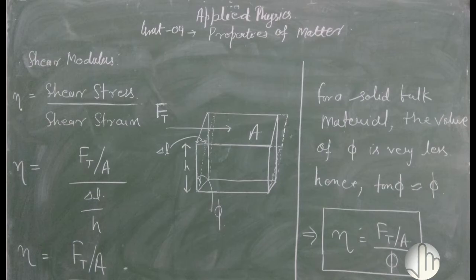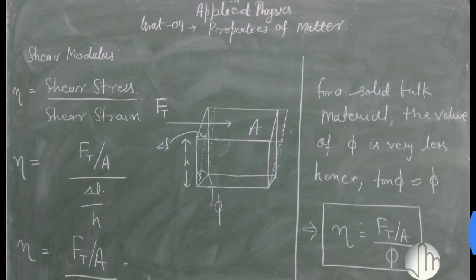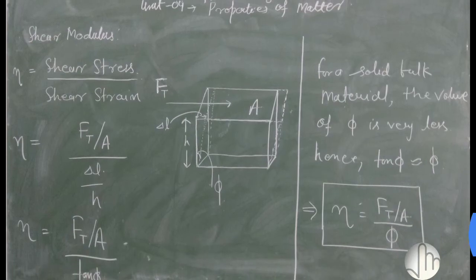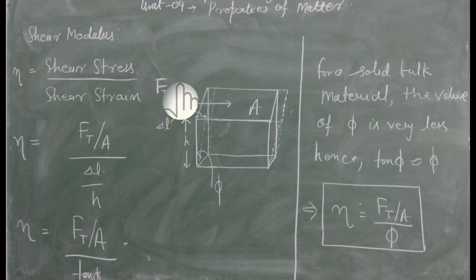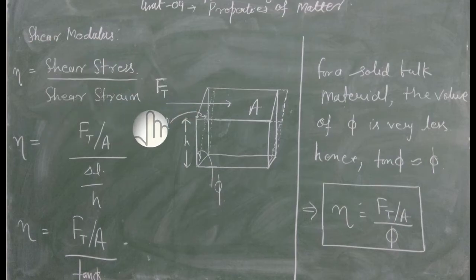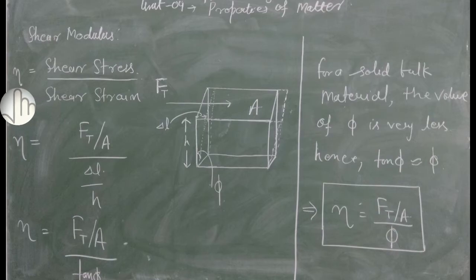Bulk modulus پڑھ لیا ہے اور اب ہے ہمارا last — shear modulus، جو اپنے syllabus کے مطابق ہے۔ Shear modulus کیا ہوتا ہے: elastic modulus کی definition کے مطابق، stress upon strain۔ Shear کی جب بھی بات کریں گے تو shear stress upon shear strain جو ہوگا وہ shear modulus ہوگا، اور اس کے لئے جو symbol use کیا جاتا ہے وہ ہے eta (η)۔